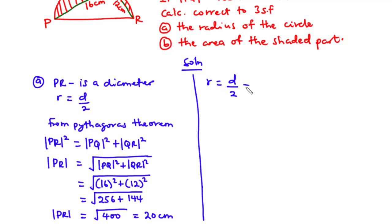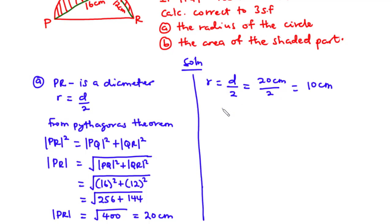The radius r equals d over 2. We have d = 20 cm divided by 2, which equals 10 centimeters. We are asked to leave our answer to three significant figures, therefore r = 10.0 centimeters. This is the radius of the circle.